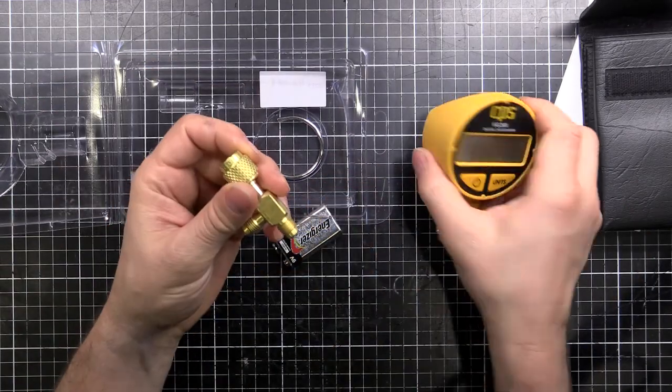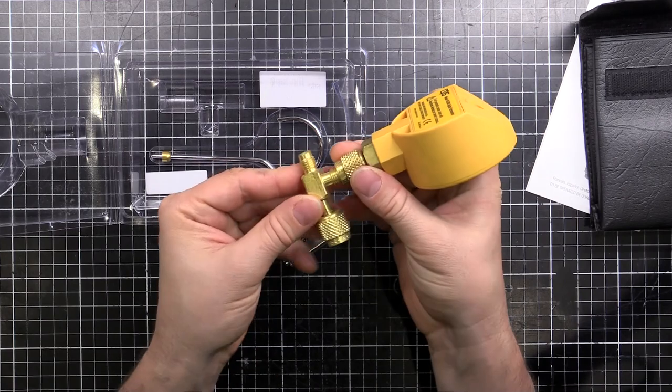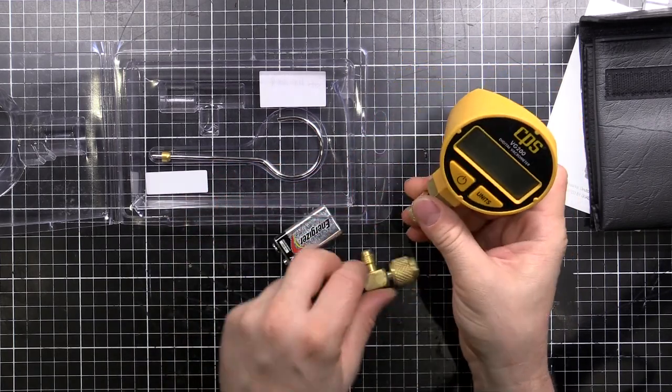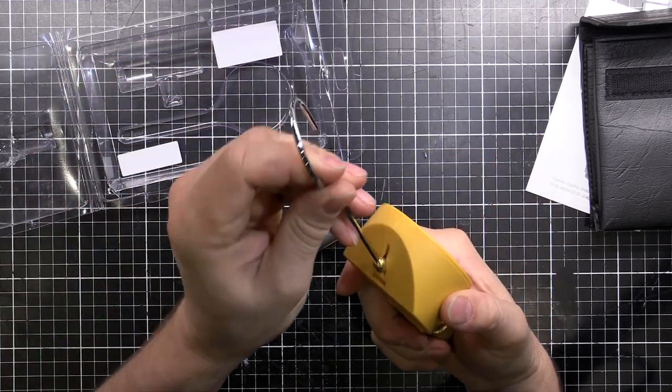The adapter. So this can connect on. It's like a T adapter. So you can have it in line on your hoses or on your vacuum pump. And then a hanging hook that just slides into here.